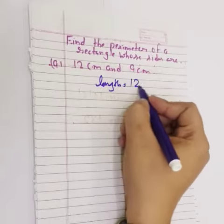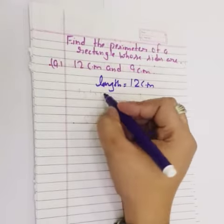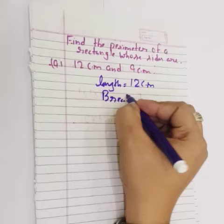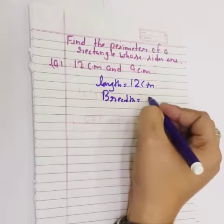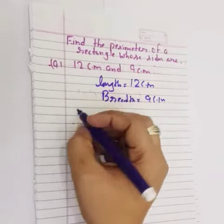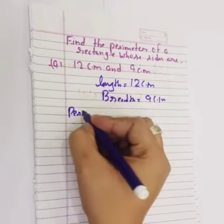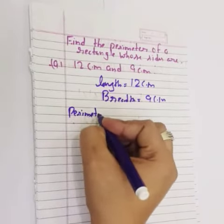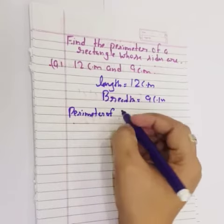Your length is 12 cm and breadth is 9 cm. We need to find the perimeter of rectangle. Perimeter of rectangle is equal to...